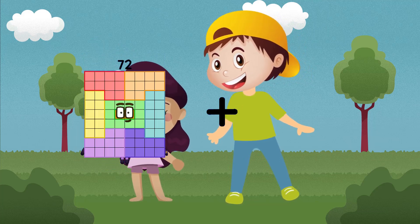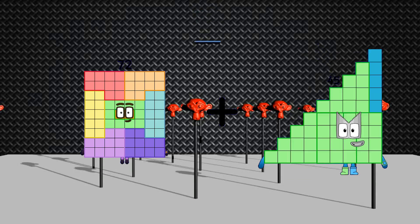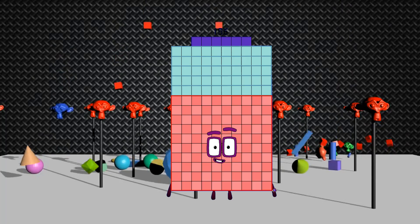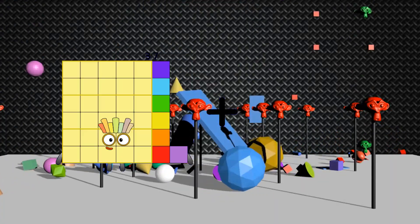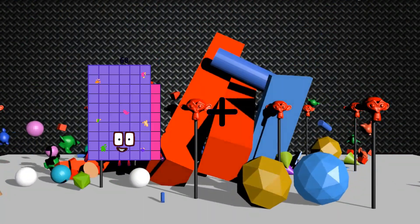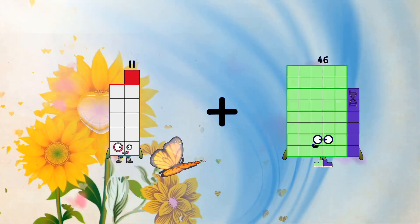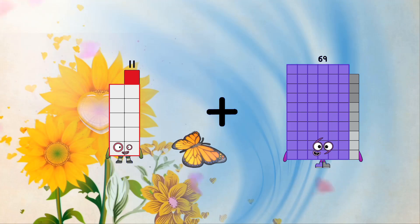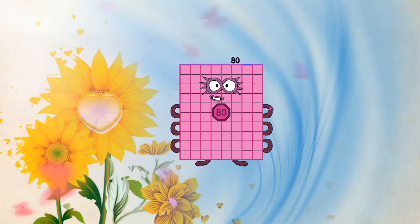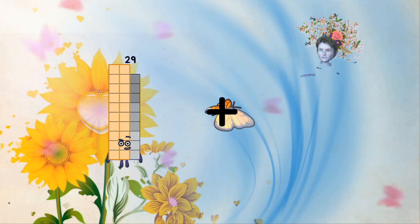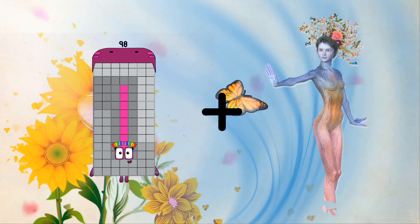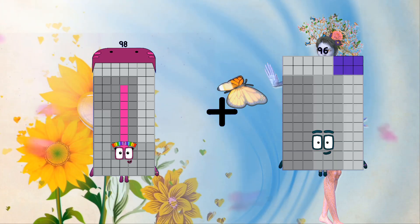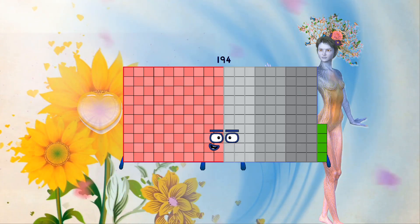72 plus 84 equals 156. 11 plus 69 equals 80. 98 plus 96 equals 194.